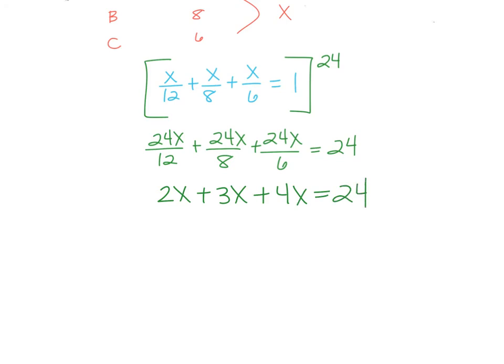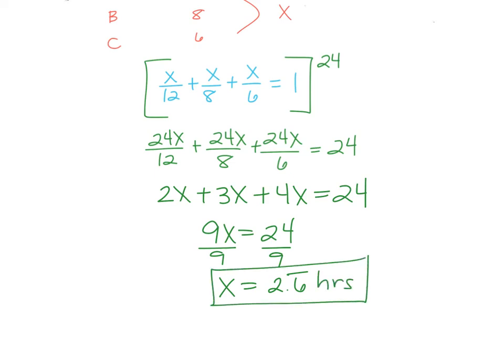So, that becomes 9X equals 24. So, if you divide by 9, X is 2.6 repeating. So, first of all, that means it would take 2.6 repeating or 2 and 2 thirds hours is maybe a nicer way to write it.